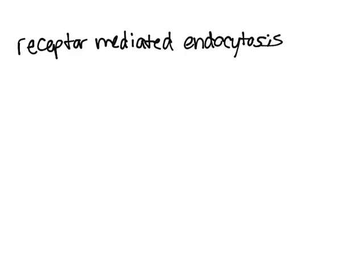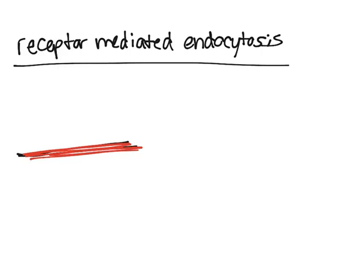Finally, we have receptor-mediated endocytosis. This one's a little bit different but essentially the same. What happens is—I'll use red for the cell membrane again—the same thing happens: a pit forms. But instead, something unique happens in that the pit has receptors that bind to specifically what it wants to bring in. Those are receptors.